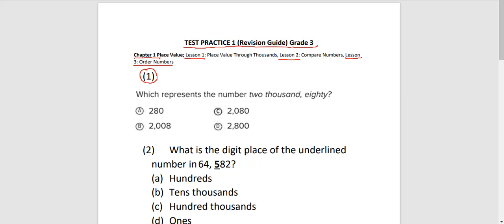Read the question to understand which represents the number 2,080. We have four options. Which of these is correct? 2,000. If I write 2,000, remember, 2,000 has three zeros. So this is 2,000. What about 80? 80 is 80.